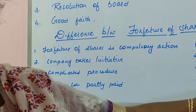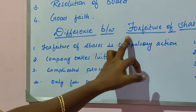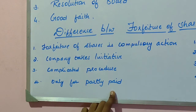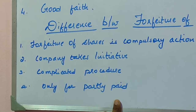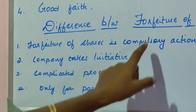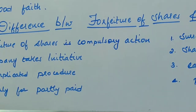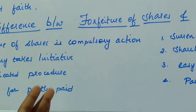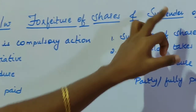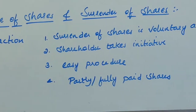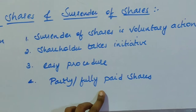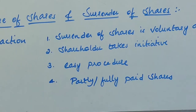The last difference is that forfeiture of shares can be done only for partly paid shares — those shares whose call amount is unpaid. For fully paid shares there are no calls due, so forfeiture is only valid for partly paid shares. Whereas surrender of shares can be done by shareholders for either partly paid shares or fully paid shares. This is about forfeiture of shares. Thank you.